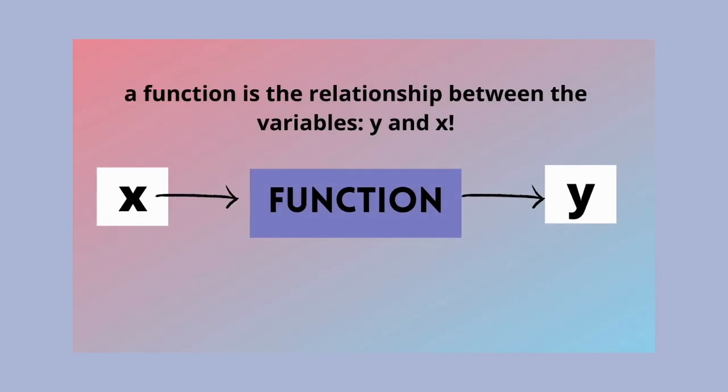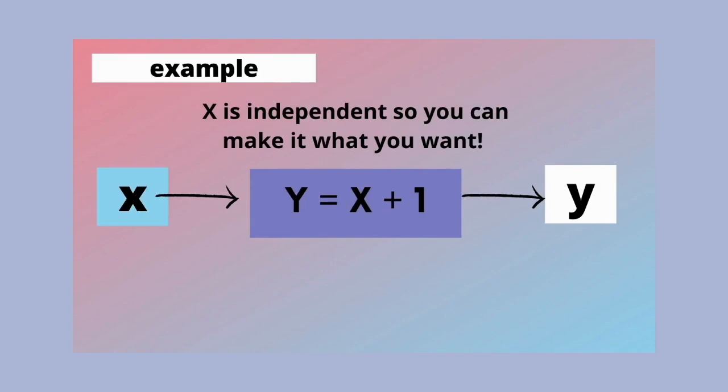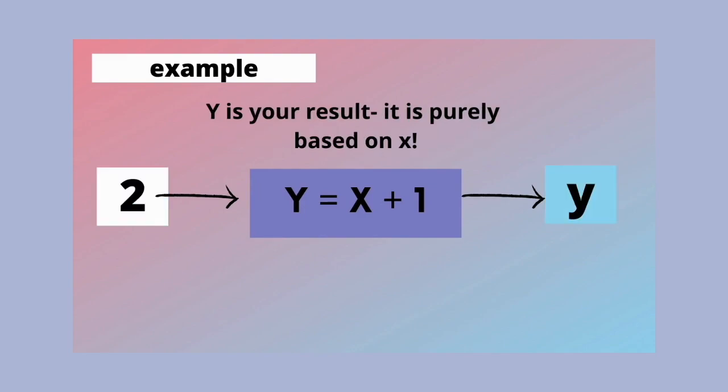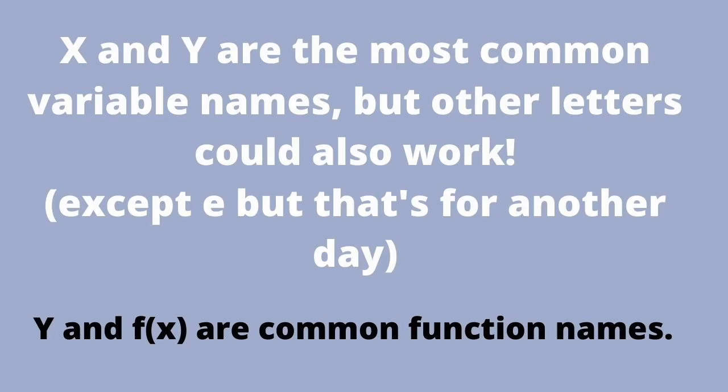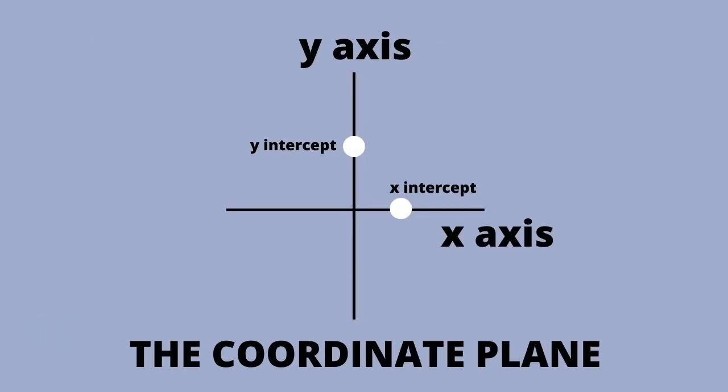The value that you put into a function is known as x, the independent variable, because you have control over what x equals. The value that comes out is y, the dependent variable, because its value depends on what x's value is. X and y are the most common letter combinations.